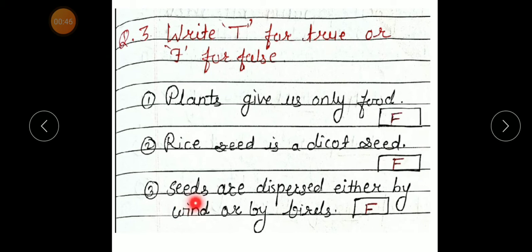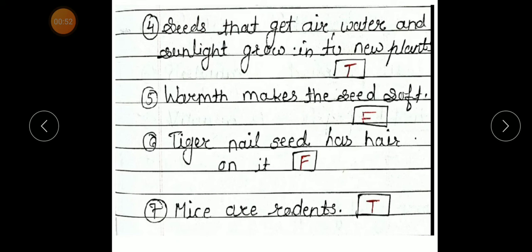Number 3. Seeds are dispersed either by wind or by birds. False. Number 4. Seeds that get air, water and sunlight grow into new plants. True.